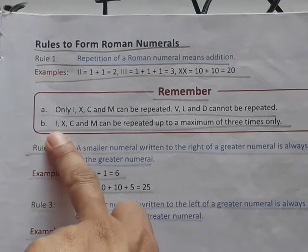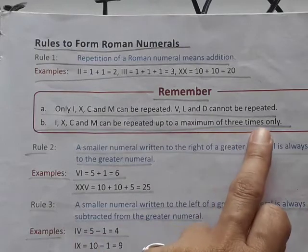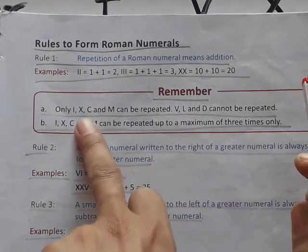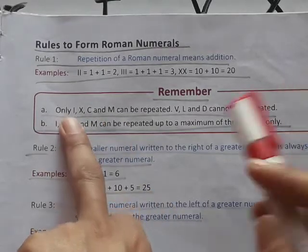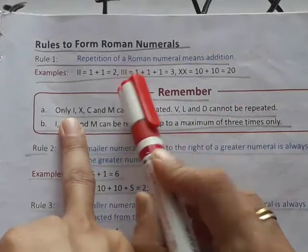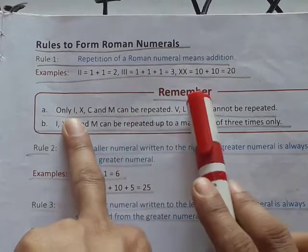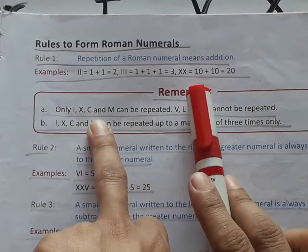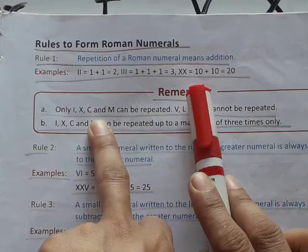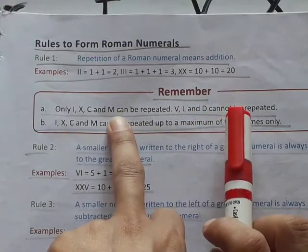I, X, C and M can be repeated, but only up to a maximum of 3 times. For example: III means 3, XXX means 30, CCC means 300, and MMM means 3000. So remember, we can repeat these symbols only 3 times — not more than 3 times.